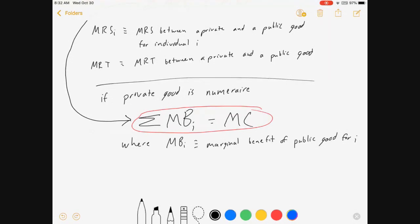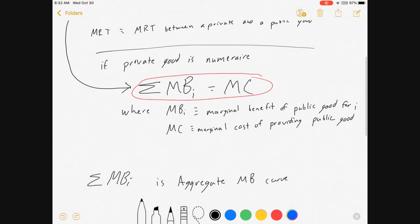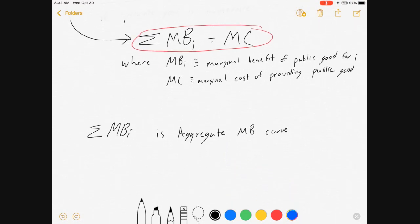So the marginal benefit for person I from their public good, marginal cost for providing the public good. Everyone's allowed to have a different marginal benefit, of course. And so the sum of all the individual marginal benefits gives us an aggregate marginal benefit curve.